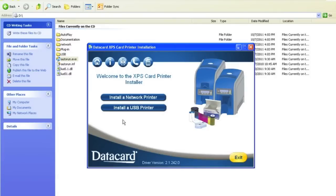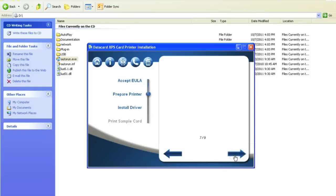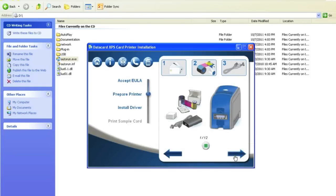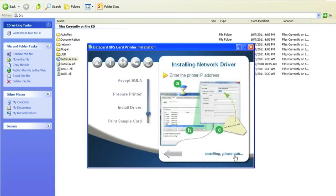After the printer is in the Ready State, go to your PC and select Install a Network Printer. On the EULA screen, select the Accept and select the Right Arrow. After ensuring the prep steps are completed, click Next and wait a few minutes as the network driver installs.